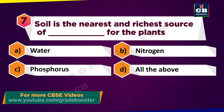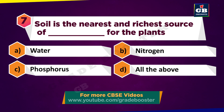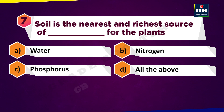Soil is the nearest and richest source of dash for plants. A. Water, B. Nitrogen, C. Phosphorus, D. All the above.